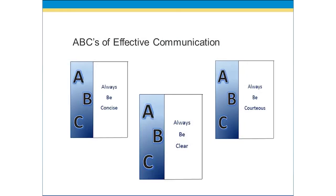There are some key rules to effective communication. To make this simple, we're going to call it the ABCs of effective communication. The first one is: always be concise. Don't say more than you need to. If you can keep your message to one topic or one point, this will allow you to be concise.